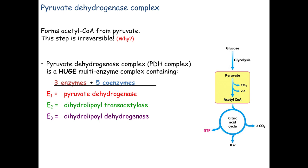We start with pyruvate and end with acetyl-CoA entering the citric acid cycle. This huge complex accomplishes a lot of chemistry with three main enzymes: E1, E2, and E3. E1 does the bulk of the work — the actual pyruvate dehydrogenase function, oxidizing and decarboxylating pyruvate. E2 and E3 are accessory enzymes that help regenerate E1 back to its original state.